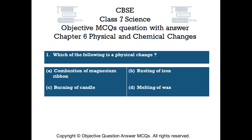Question number 1. Which of the following is a physical change? Option A: Combustion of Magnesium Ribbon. Option B: Rusting of Iron. Option C: Burning of Candle. Option D: Melting of Wax.